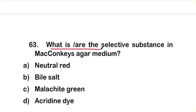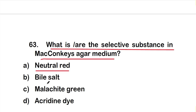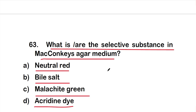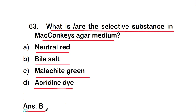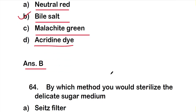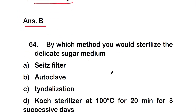Question number 63: What is the selective substance in MacConkey's agar medium? Options are: A) neutral red, B) bile salt, C) malachite green, D) acridine dye. The right answer is option B, bile salt.